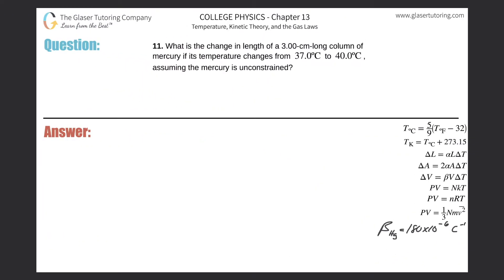Number 11: What is the change in length of a three centimeter long column of mercury if its temperature changes from 37 degrees Celsius to 40 degrees Celsius, assuming the mercury is unconstrained?